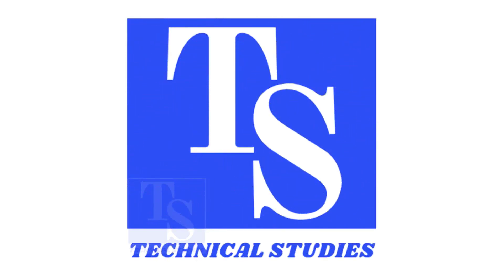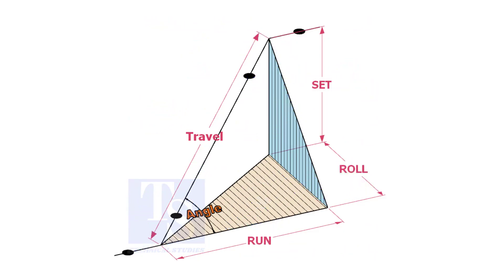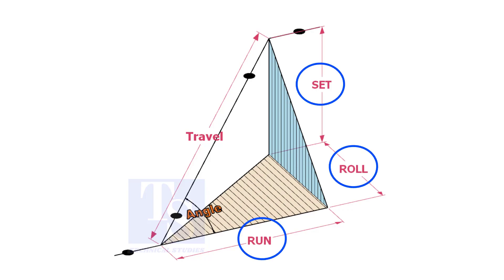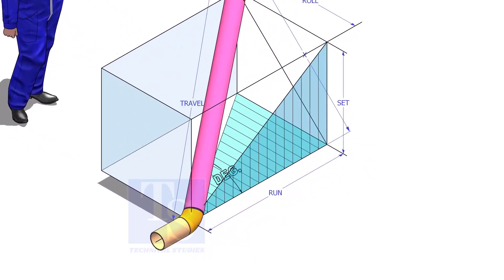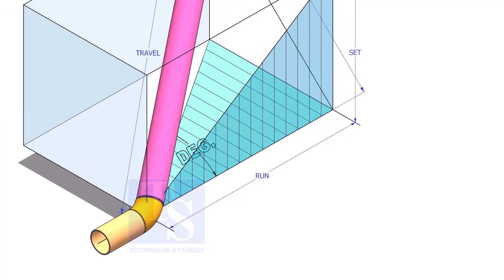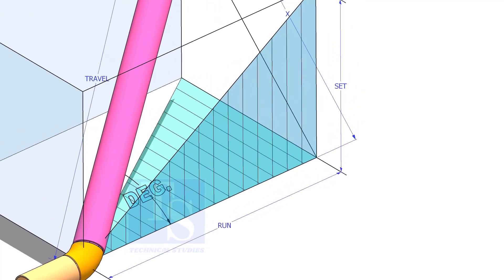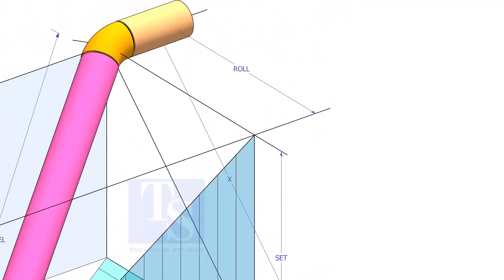Welcome to Technical Studies. In a piping drawing of a double rolled offset, usually the dimensions of the run, set and roll are given. In this video, I will show you how to calculate the travel length and the including angle of a double rolled offset pipe.